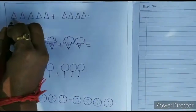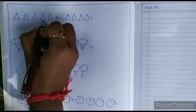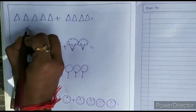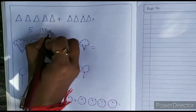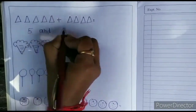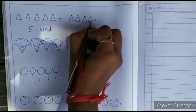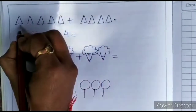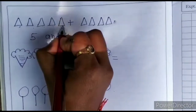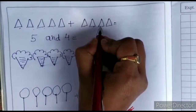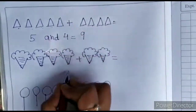I have some triangle. 2, 3, 4, 5. One side 5 triangle and second side. 1, 2, 3, 4. 1, 2, 3, 4, 5, 6, 7, 8, 9 is equals to 9.